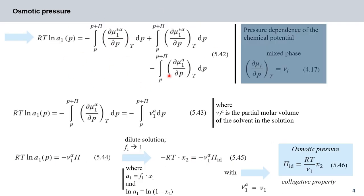Plugging that in gives us expression 542. Now recall equation 417 from lecture 8, which we derived for the pressure dependence of the chemical potential. Substituting that in gives equation 543: RT ln A₁ at pressure p equals minus the integral between p and p plus pi of (d mu₁^alpha / dp) at constant temperature, dp, which equals minus the integral between p and p plus large pi of V₁^alpha dp.